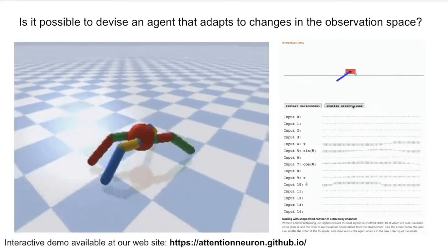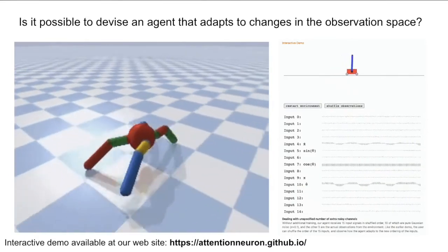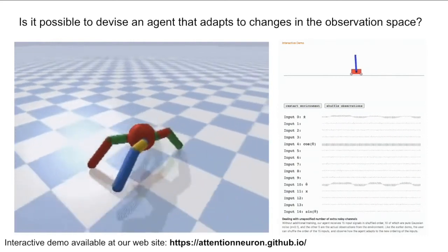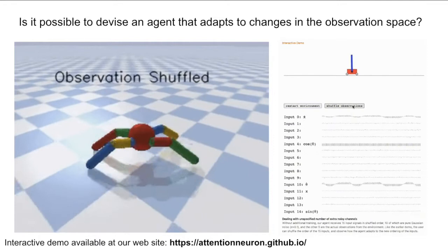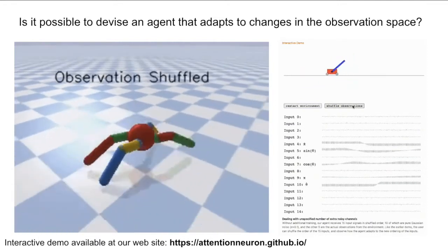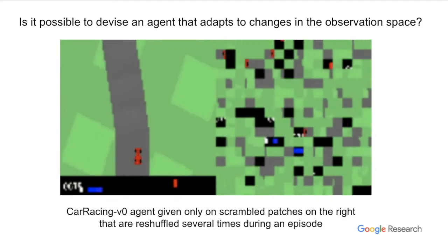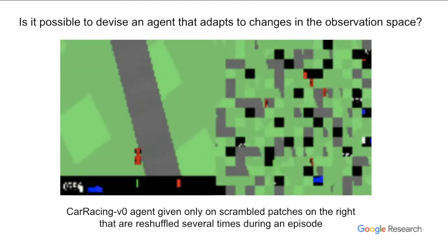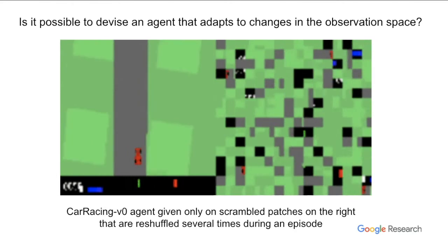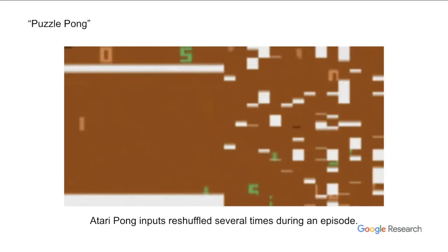We show that the ant robot's observations are shuffled frequently, yet the robot can quickly adapt to the new observations. On the right, we show a cartpole agent rebalancing the pole as the user reshuffles its inputs. Moreover, the agent can perform well even with 10 input channels of pure noise. In vision tasks, we present the agent with scrambled screens, and yet our car racing agent is able to drive well even when most of the global spatial information is lost. In a variation of the Atari Pong which we call puzzle pong, our agent is able to play the game even when its input space is constantly shuffled.